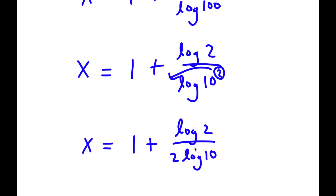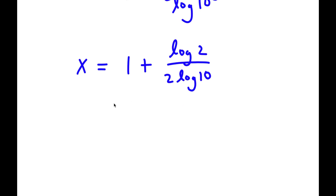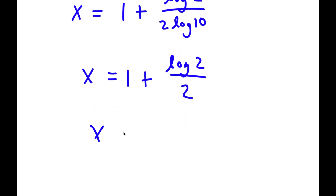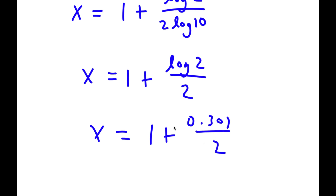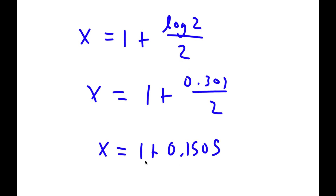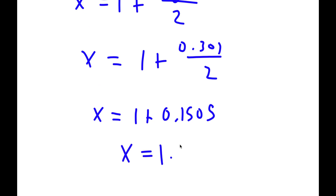Log 10 equals 1, so x equals 1 plus log 2 over 2. Log 2 equals 0.301, so I have 0.301 over 2 equals 0.1505, giving x equals 1 plus 0.1505, which is 1.1505.